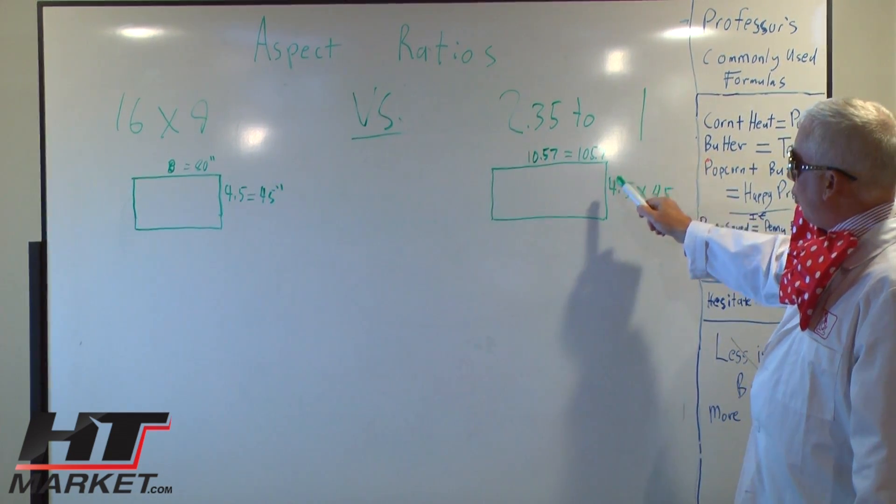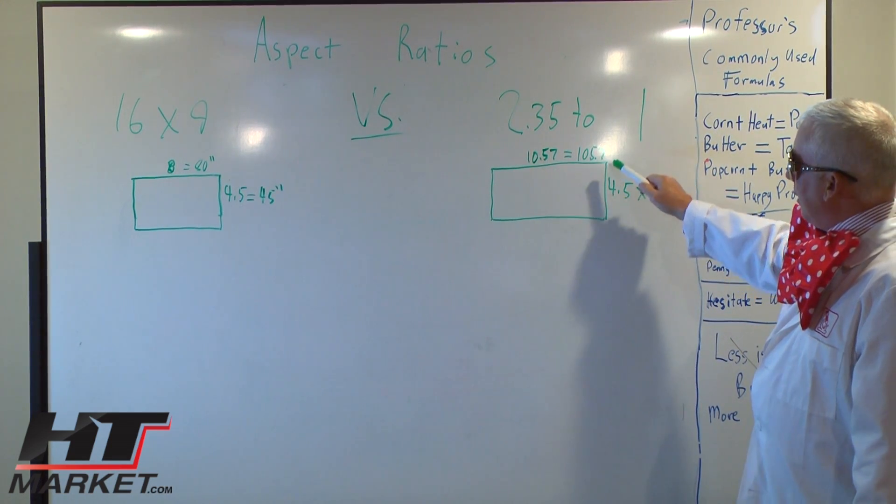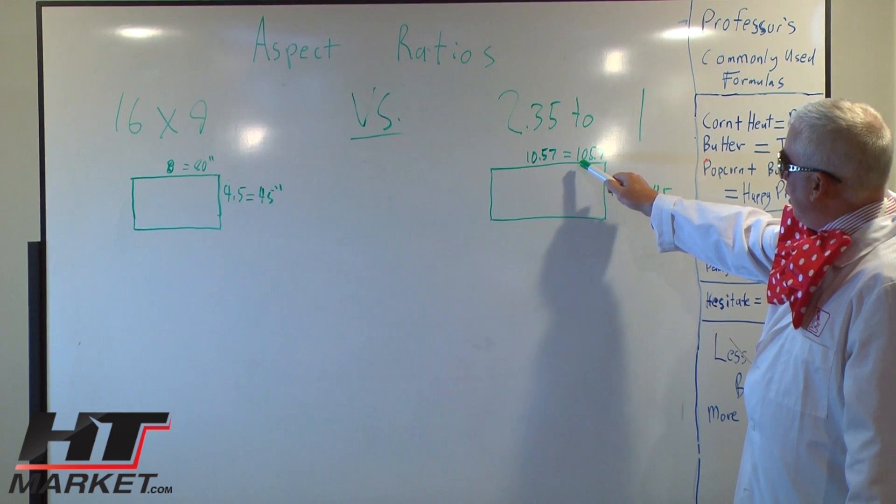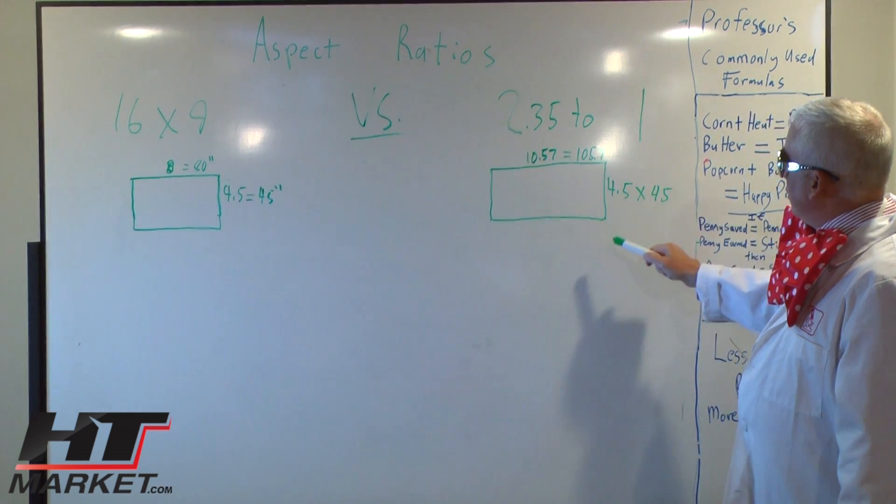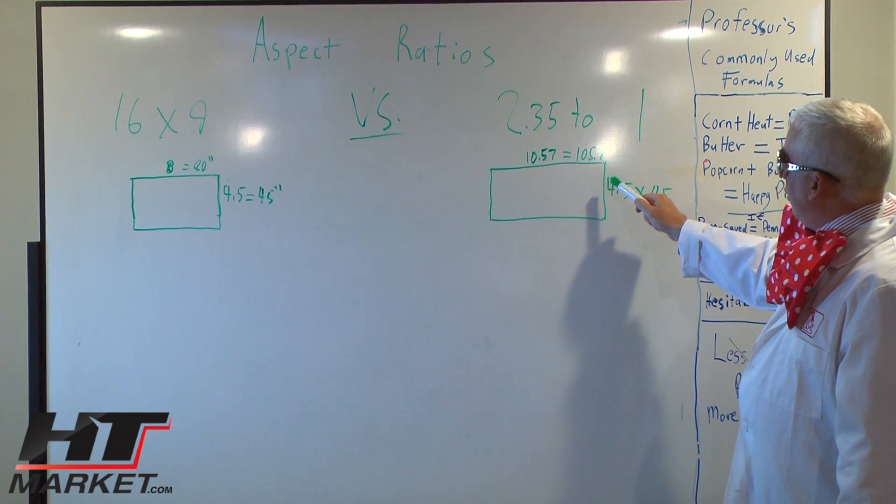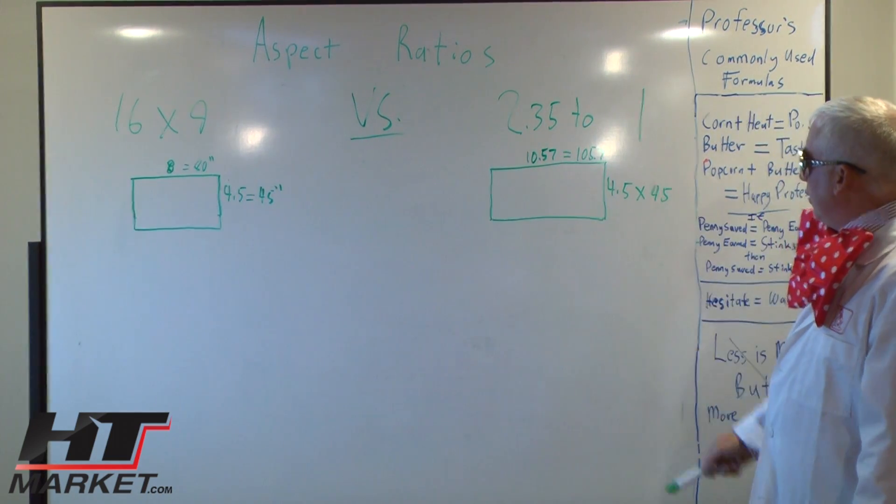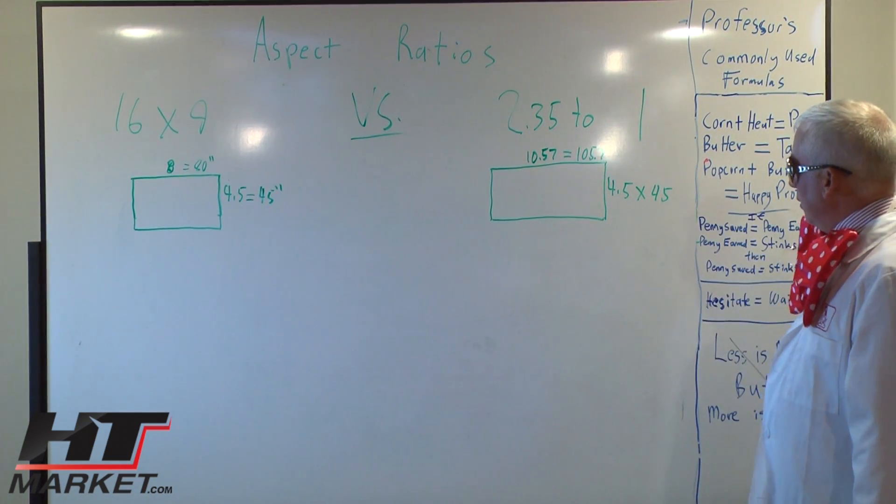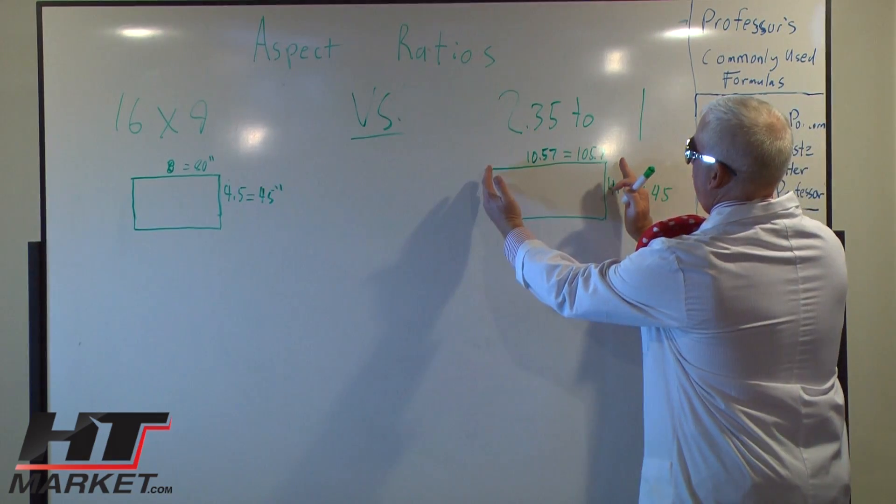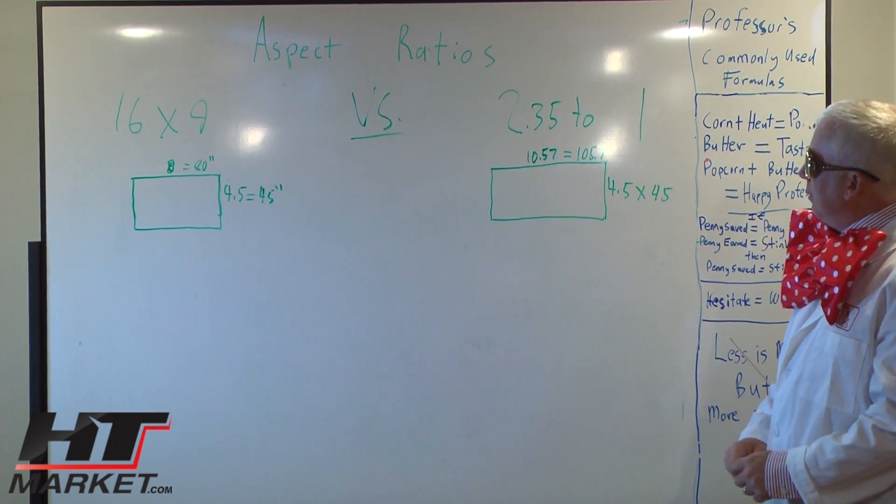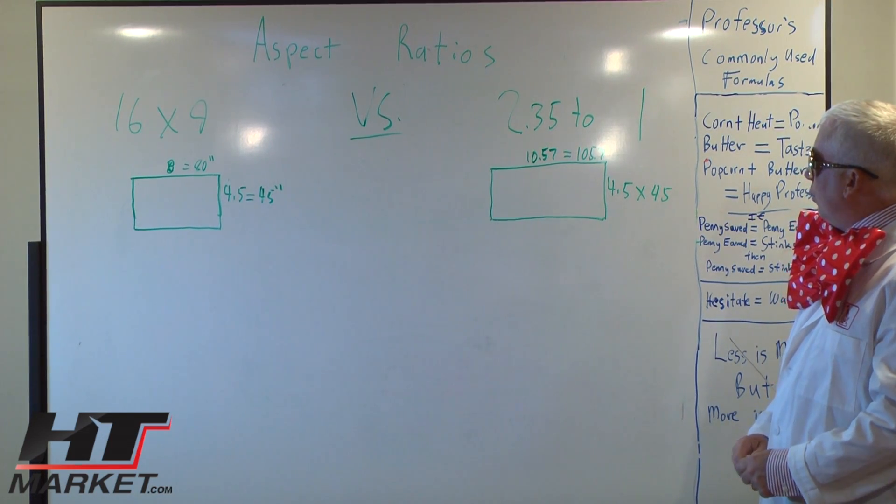If you do that on the board, you've kept the constant height of 4.5 and as you see it's 10.57. So that's almost two and a half to 1, the width to the height. You're getting a wider picture in your theater so it envelops you more. That's why a lot of movies are shot in 2.35 to 1.